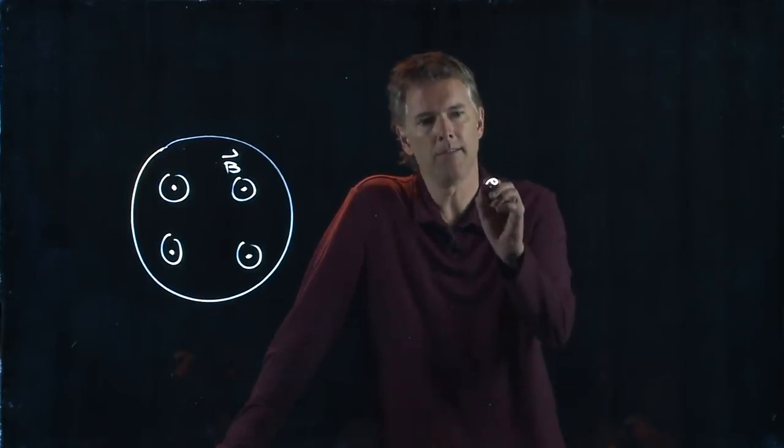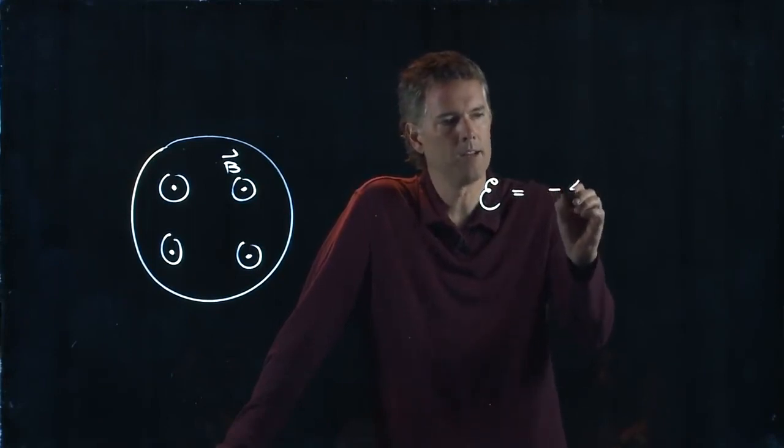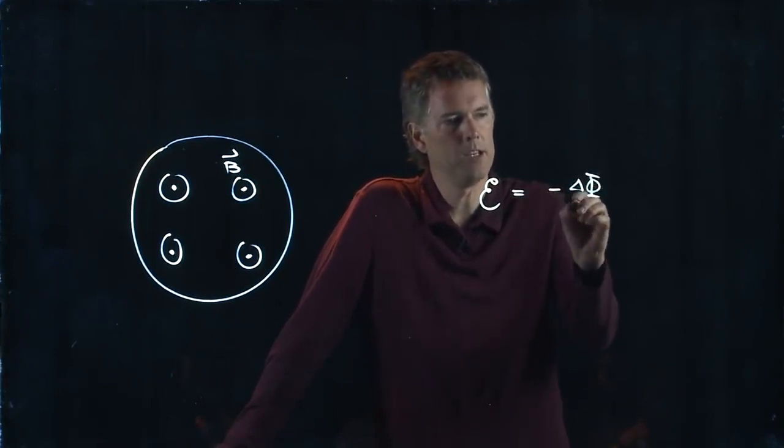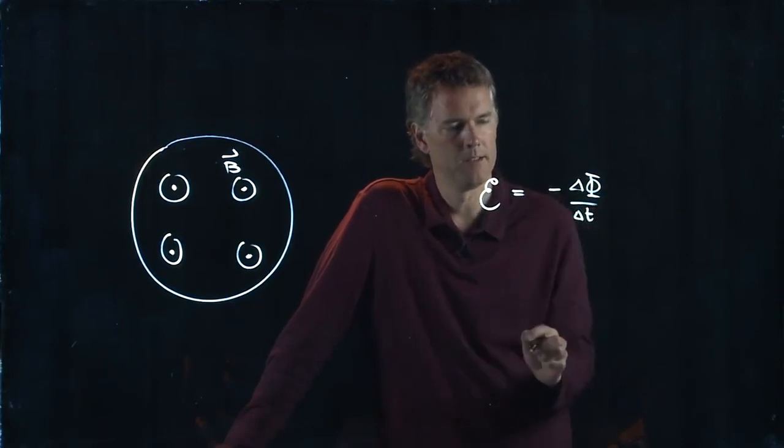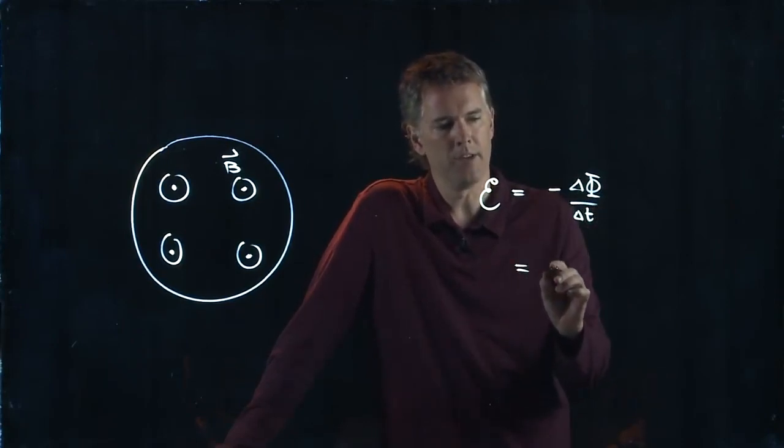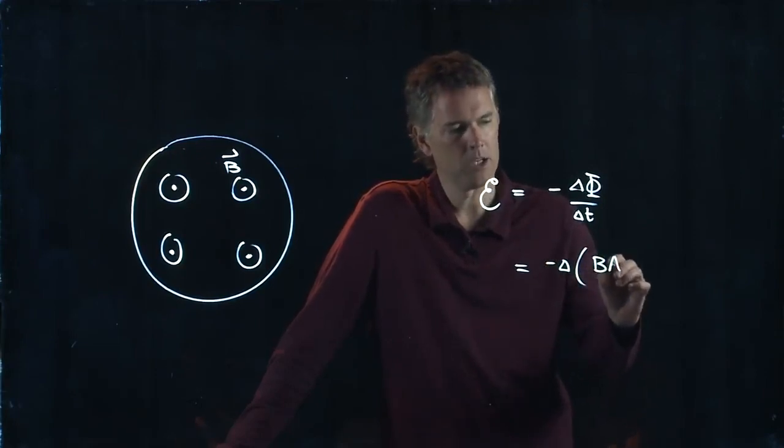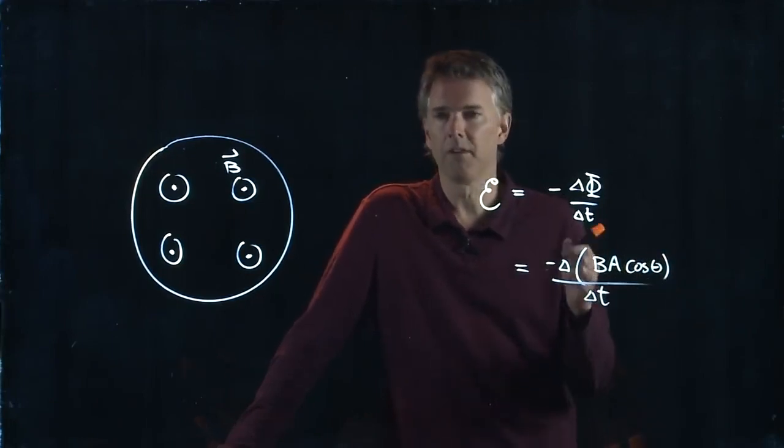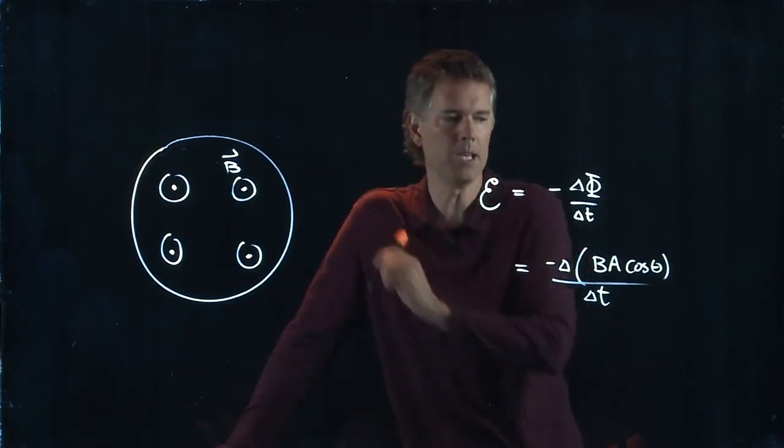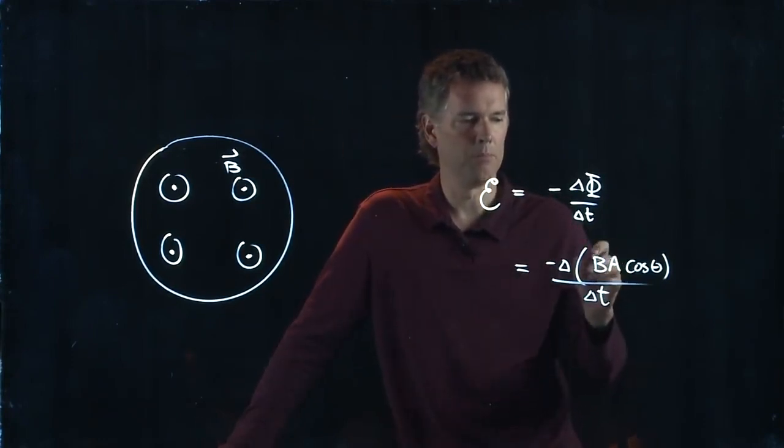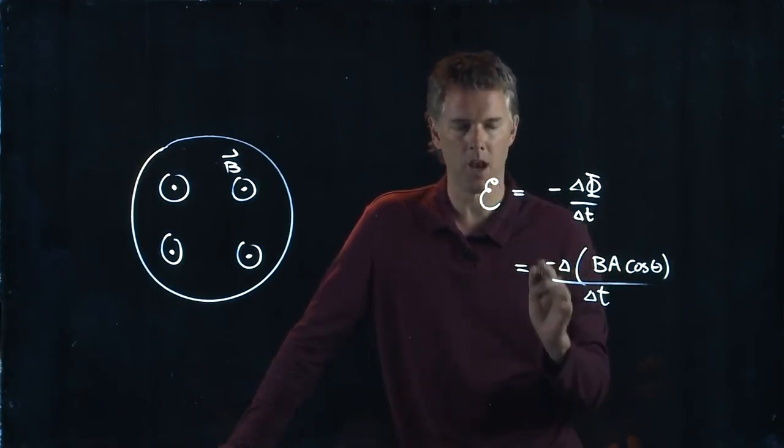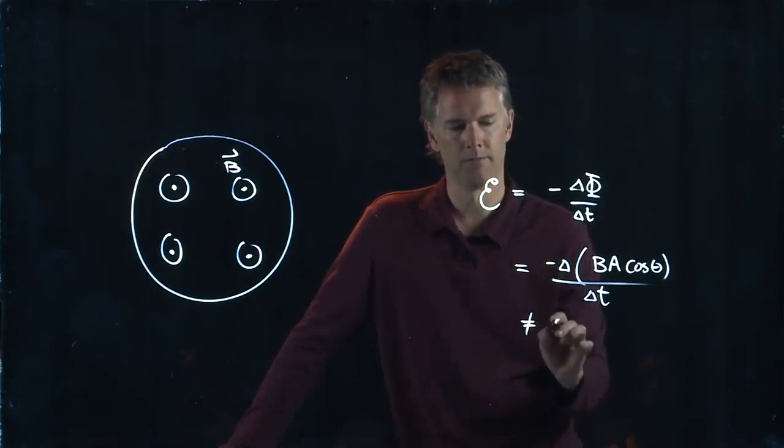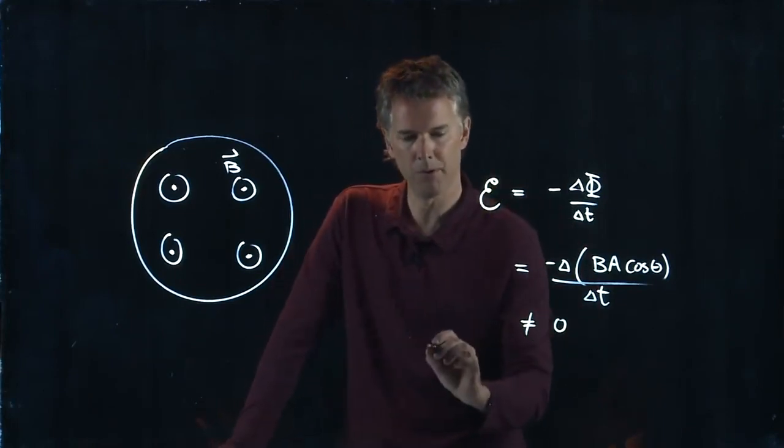Okay, EMF is negative delta phi over delta t. And we know what delta phi is right? It can change B, it could change A, or it can change theta. So is something changing? Yes. They tell us that B increases. So B increasing means that this is non-zero. Okay so EMF is produced.